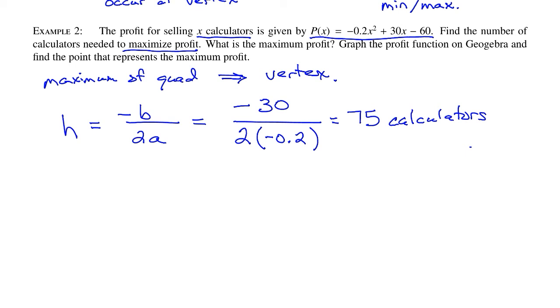So then, what is the maximum profit? To find that, I'm going to plug 75 in to the P function and that will tell me the actual amount of money made in profit from selling the 75 calculators. Well, if you plug this into the P function, you get $1065. And there you go. By selling 75 calculators, we make a maximum profit of $1065.